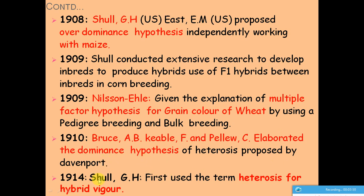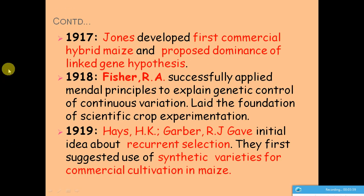In 1914, G.H. Shull coined the first use of the term 'heterosis' to describe hybrid vigor. In 1917, Jones developed the first commercial hybrid maize and proposed the dominance of linked genes hypothesis to explain the mechanisms behind heterosis.